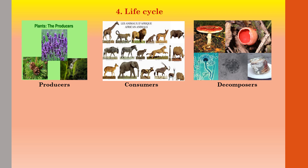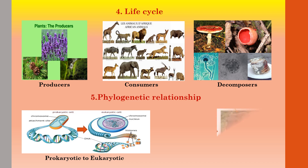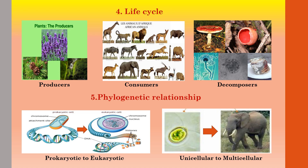The fifth and last criteria for classification is phylogenetic relationship. Phylogenetic means it is based on the evolutionary history. Organisms are divided into two groups: the evolution from prokaryotic to eukaryotic, and the evolution from unicellular to multicellular.